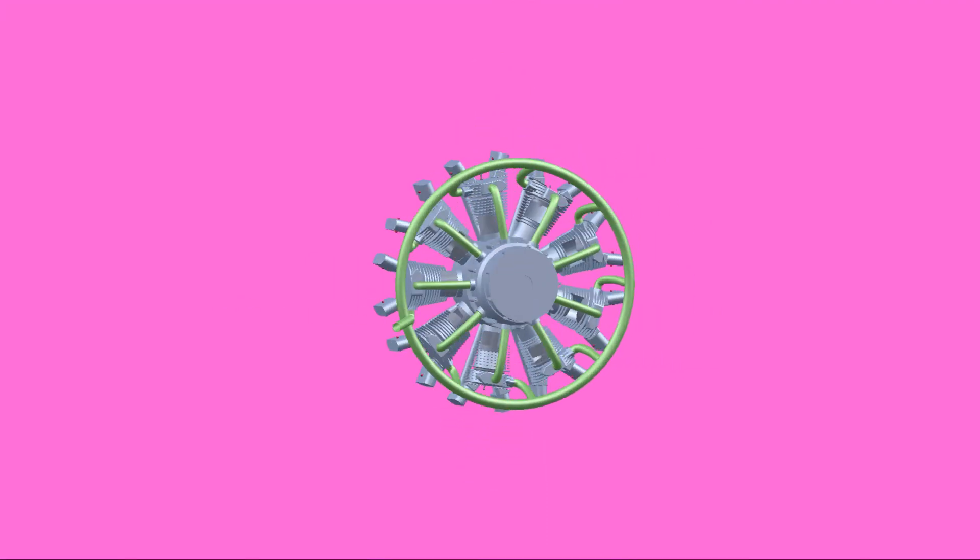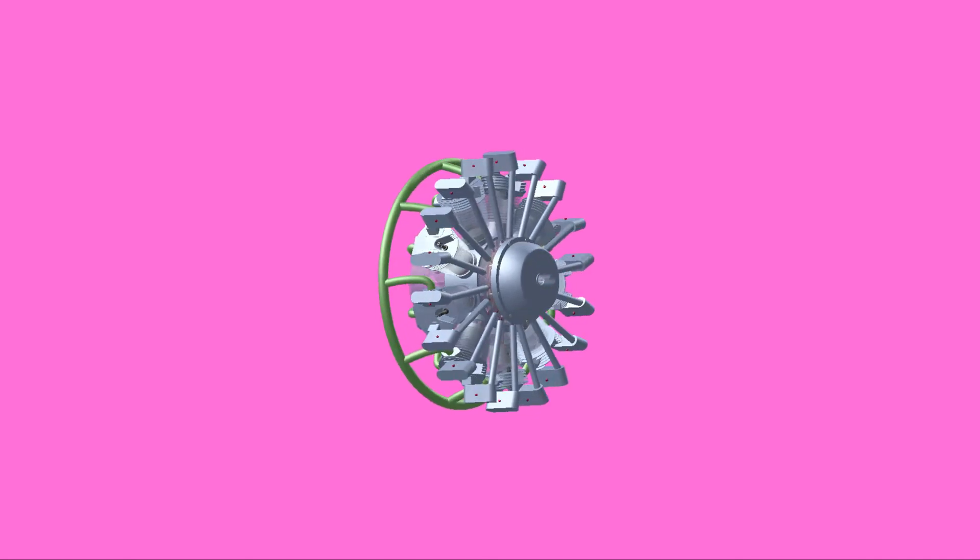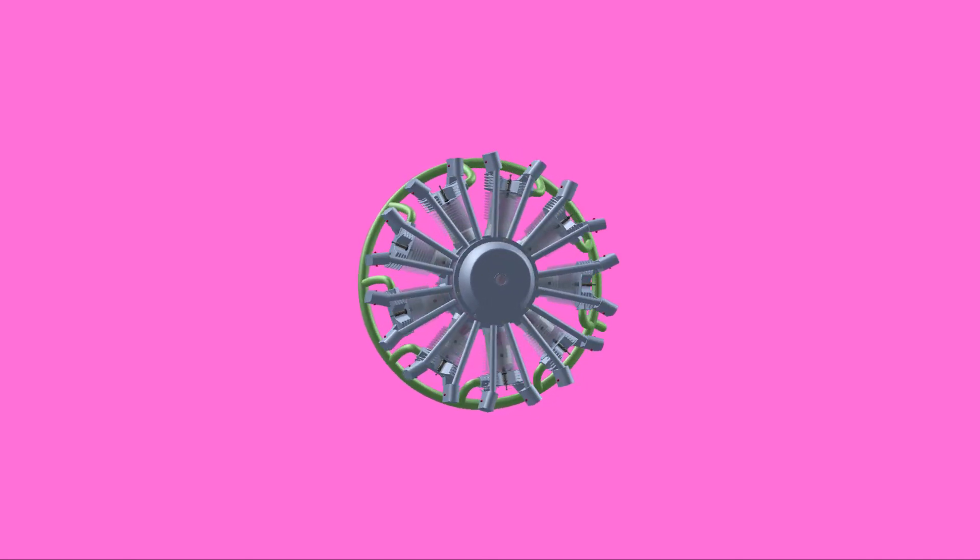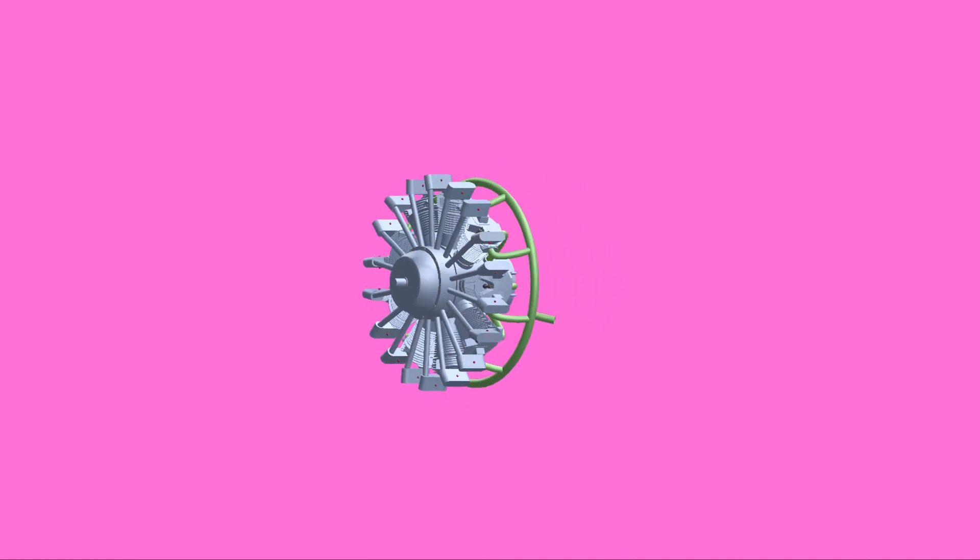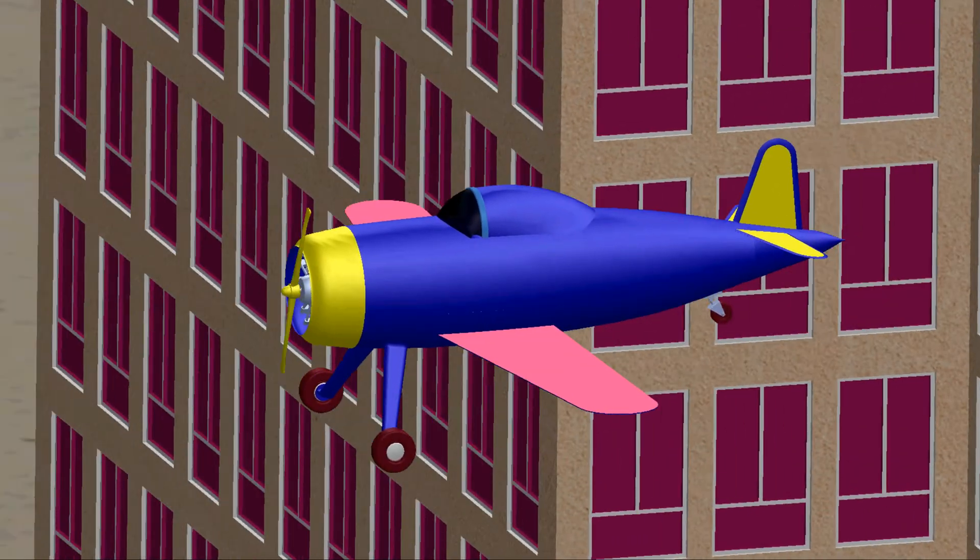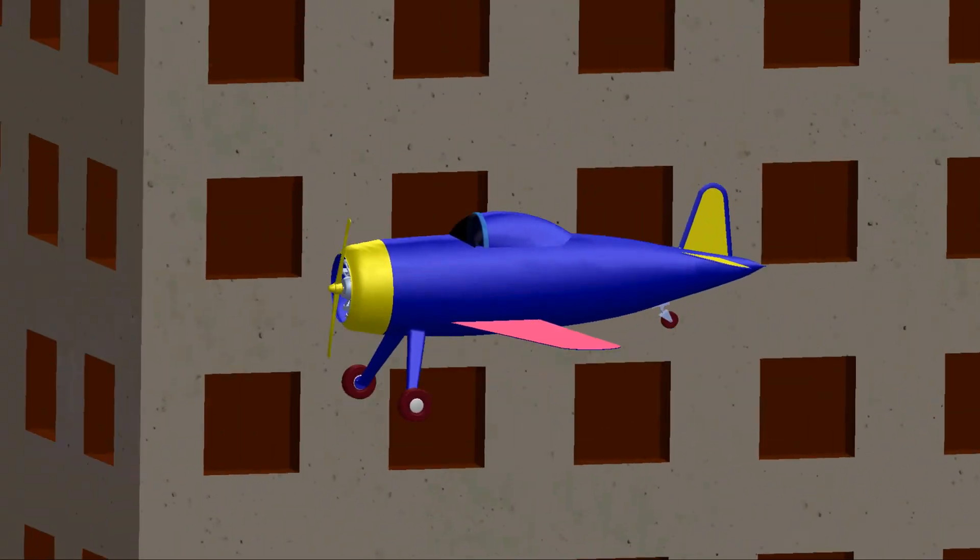The radial engine is a reciprocating type of internal combustion engine in which the cylinders are mounted radially around the crankshaft. The radial engine was commonly used in aircraft before the gas turbine engines became predominant.